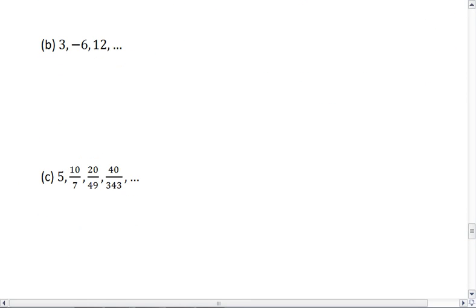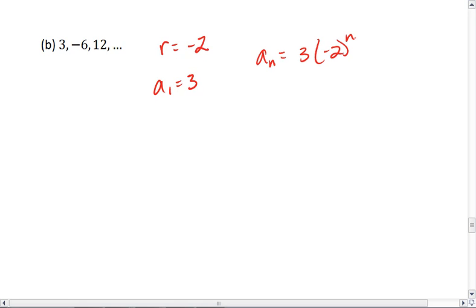Let's look at example b. Here, to get from one term to the next, we are multiplying by a common ratio of negative 2. Our first term is 3. So for our explicit formula, we get a sub n equals 3 times negative 2 to the n minus 1.